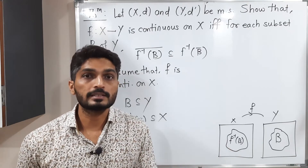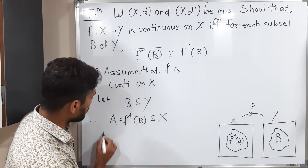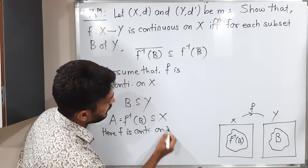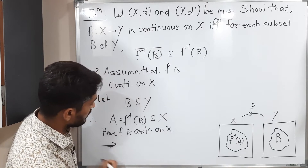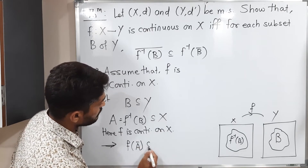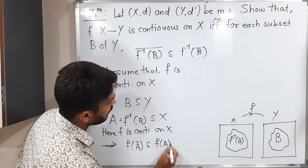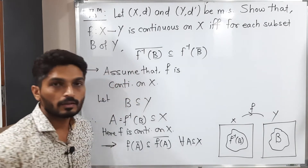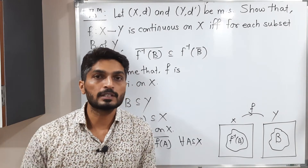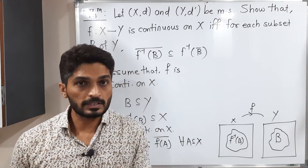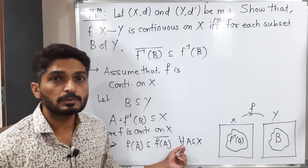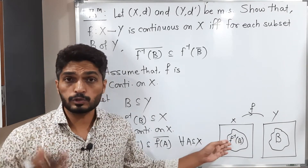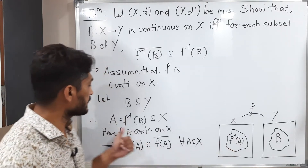One result we have already seen: if f is continuous on X, then for any subset A of X, f of A-bar is a subset of f(A)-bar. This was proved in a previous video. Since our set A — which is f inverse of B — is also a subset of X, this result applies to our set A as well.